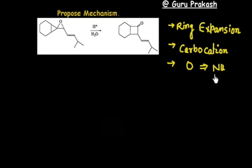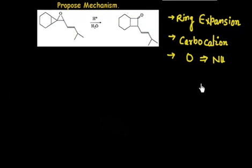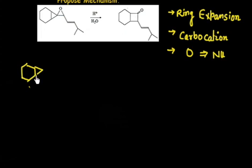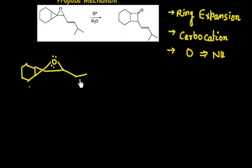Now let us apply some ideas and see what will happen. The initial compound has a six-membered ring, then a triple bond, a three-membered ring, four lone pairs on oxygen, and a double bond.